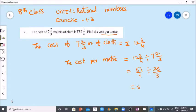That is 51 by 4 into 3 by 23. My children, let's multiply. 51 into 3 is 153.